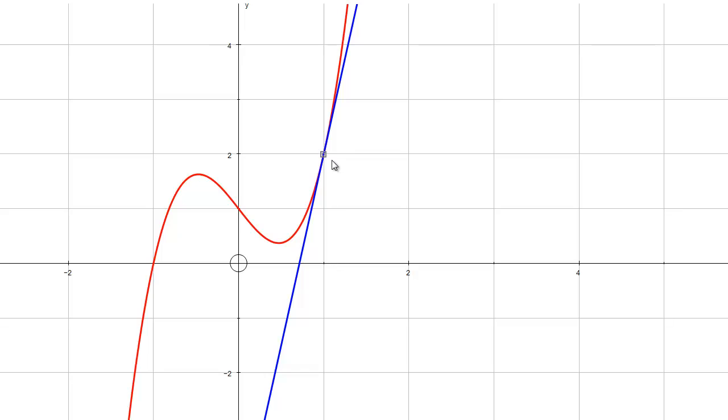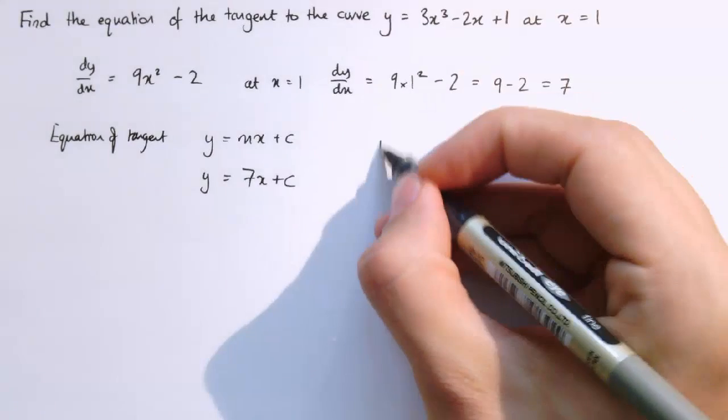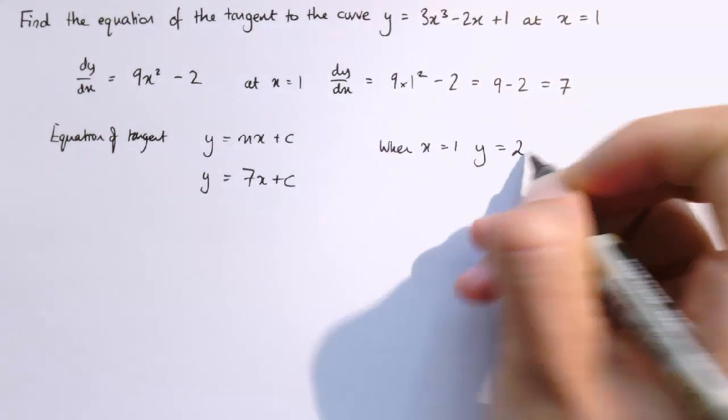We can see that when x is 1, the y-coordinate is exactly 2. So when x equals 1, y equals 2.